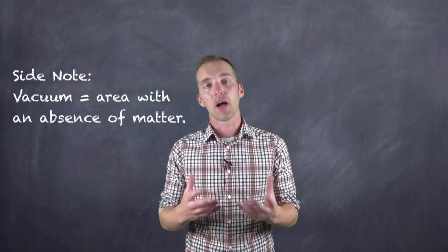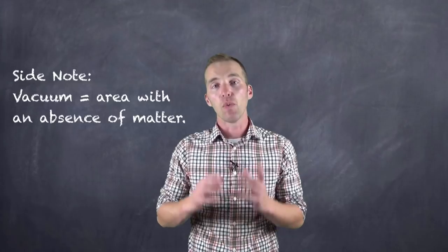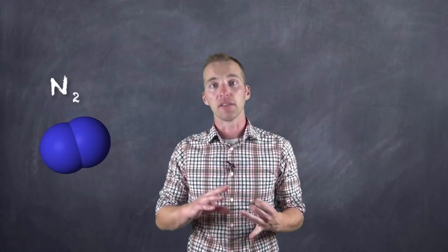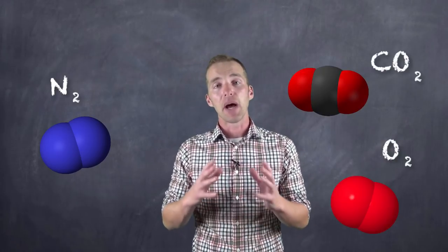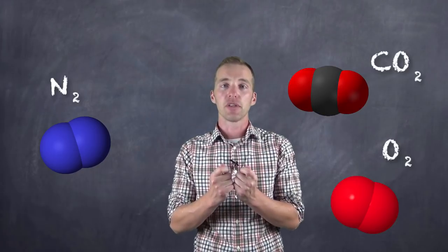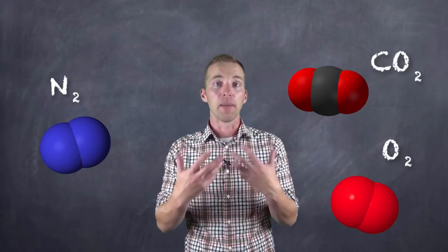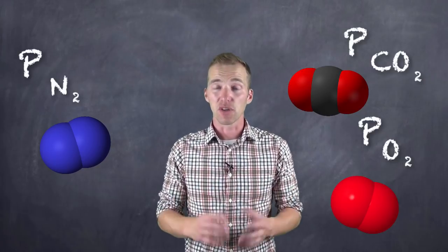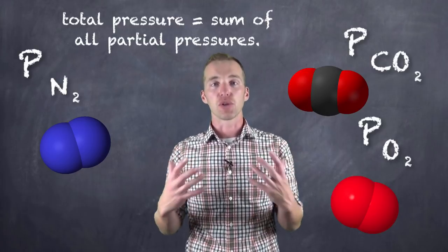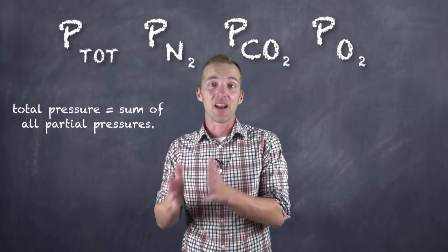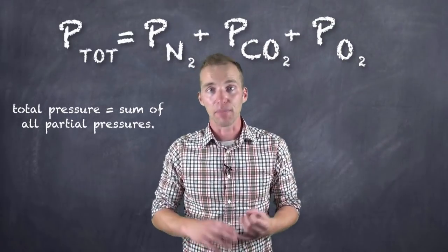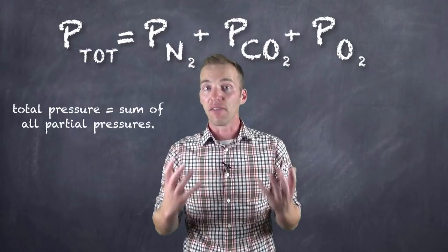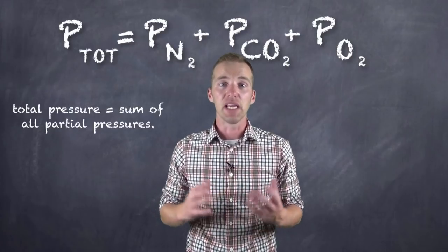Unless the object is in a vacuum, it's coming into contact with the particles that surround it. Air is a mixture of gases — primarily nitrogen, lower levels of oxygen, and trace amounts of things like carbon dioxide and argon — and all of these molecules come together to exert pressure. When we deal with a mixture of gases, we have the pressures of all of the individual gases, which we refer to as partial pressures. The total pressure that air exerts is the sum of the partial pressures of all the individual gases.